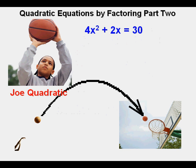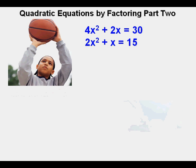For the next problem, Joe will try to solve 4x squared plus 2x equals 30. The phrase 'try to solve' is important because it accounts for the possibility that this equation may not have real solutions or may not be factorable, requiring another method such as graphing or the quadratic formula. The first thing Joe notices is that the equation can be simplified by dividing each term by 2, giving 2x squared plus x equals 15. He then moves the 15 to get 2x squared plus x minus 15 equals 0.